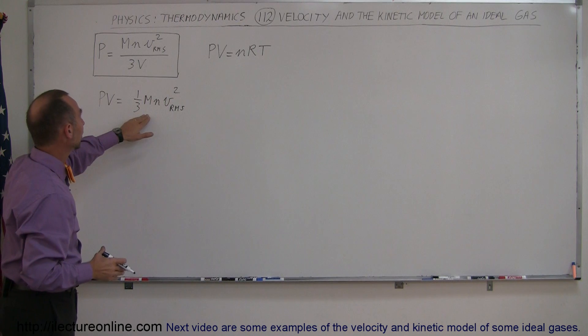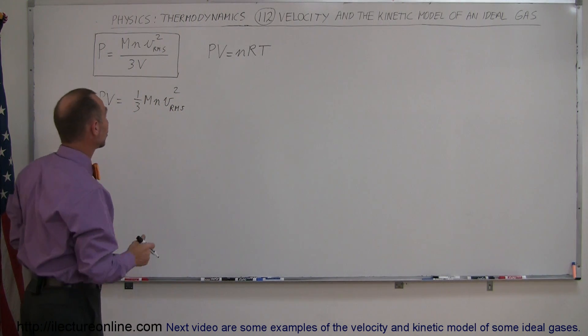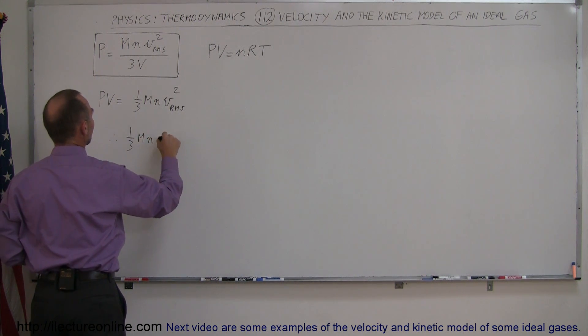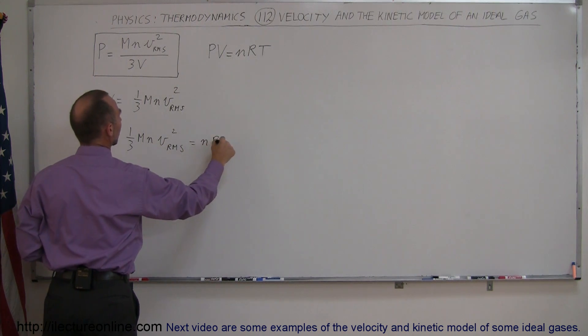Since PV is equal to this and PV is also equal to this, that means those should be equal to each other. Therefore we can say that one third MN VRMS squared is equal to nRT.